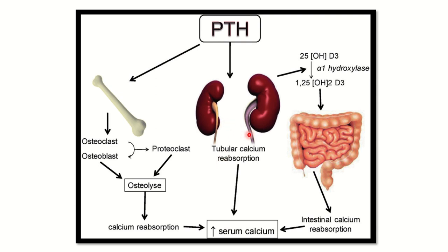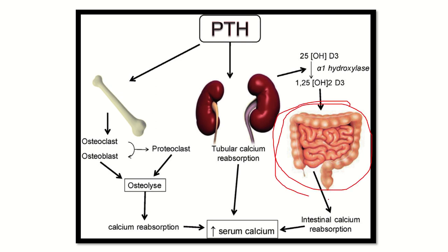1,25-dihydroxycholecalciferol is also produced in the proximal convoluted tubular cells. It then goes to the intestine and increases serum calcium level. Among these three pathways, the intestinal pathway is the available and practical pathway.